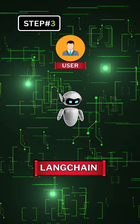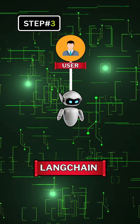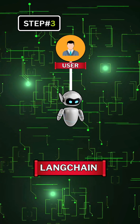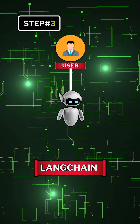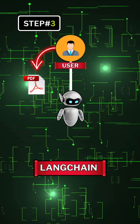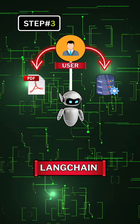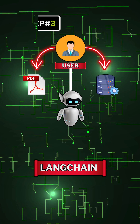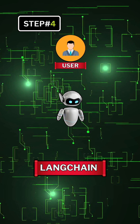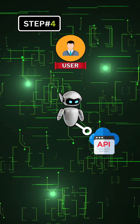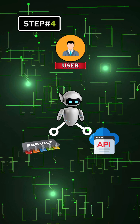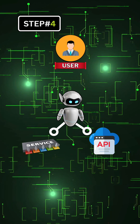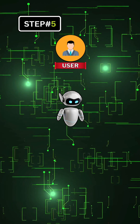Step three: the AI agent will search for relevant information from the user's query, which can come from anywhere — such as documents like PDFs, databases, and private knowledge bases. Step four: it calls external APIs for real-time data and specific services if required.